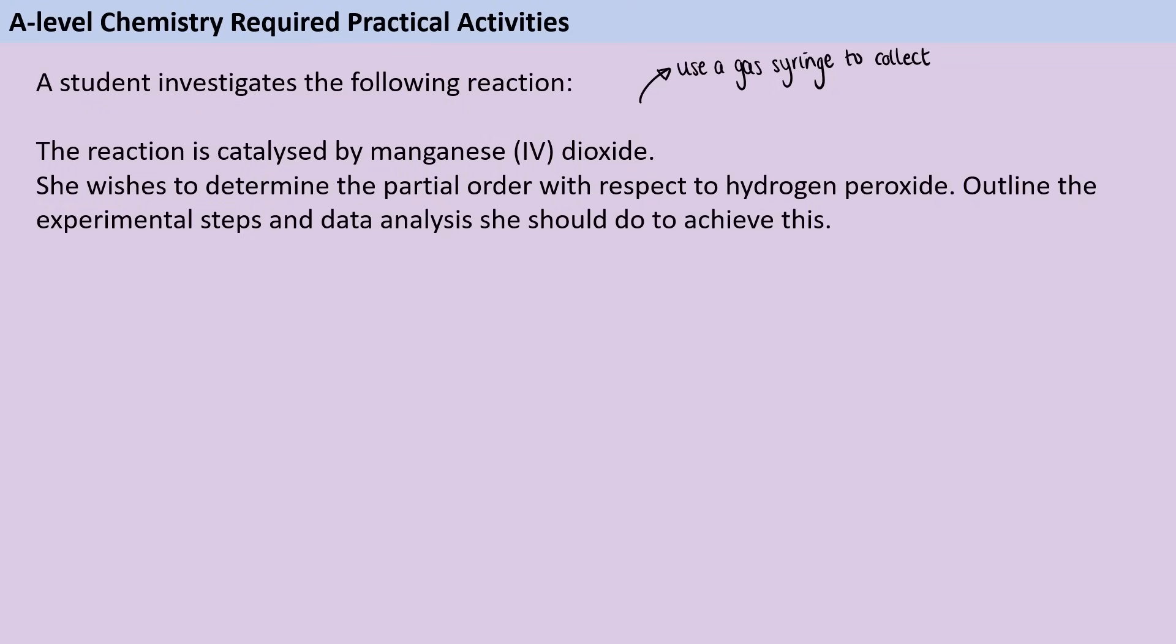In any investigation where we're trying to deduce the partial order with respect to one of the reactants, we don't want the concentration of the other reactants to change. But of course, during a chemical reaction, they are going to change because they're going to be used up. So it's really important that wherever you're investigating partial order, everything else is in massive excess. We don't have a second reactant here, but we do have a catalyst. And we want to make sure that we're adding enough of that catalyst that even when a bit of it gets used up, there's still far more than we need. This is effectively going to make it zeroth order with respect to this catalyst.